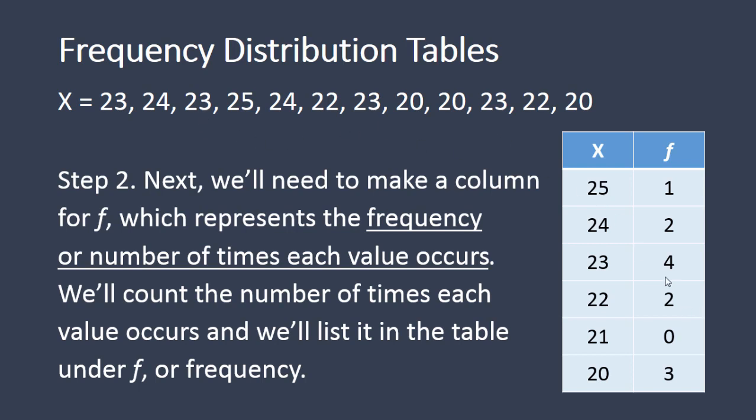We have 2 values of 22, so let's double check that, 1, 2. We have no 21s as we saw before, so notice how we include a 0 here when there are no occurrences of that value, and then we have 3 values of 20. Let's check that. So we have 1, 2, 3 twenties.